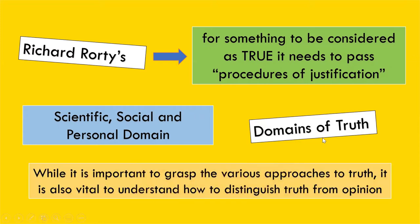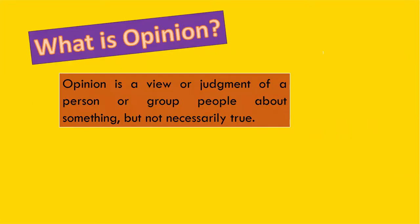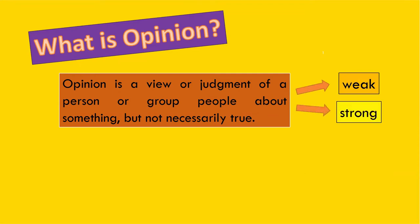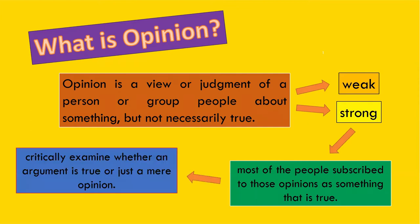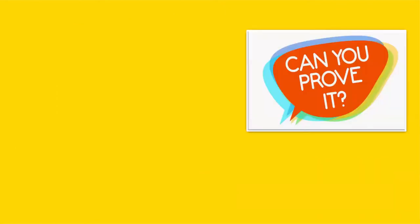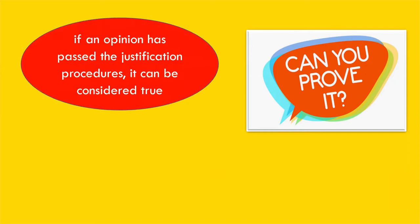While it is important to grasp the various approaches to truth, it is also vital to understand how to distinguish truth from opinion. Opinion is a view or judgment of a person or group of people about something, but not necessarily true. While some opinions are weak and easy to refute, other opinions are very strong — strong in the sense that most people subscribe to those opinions as something true. It is therefore necessary for us to critically examine whether an argument is true or just a mere opinion.